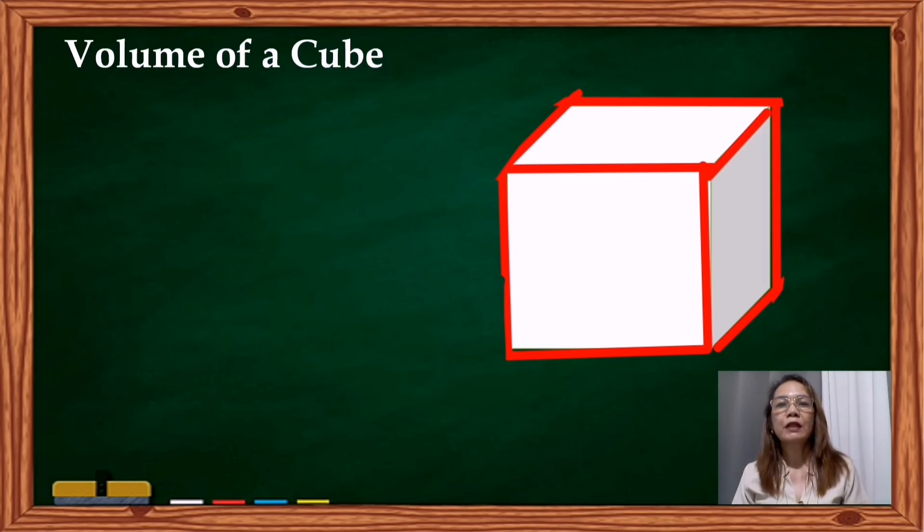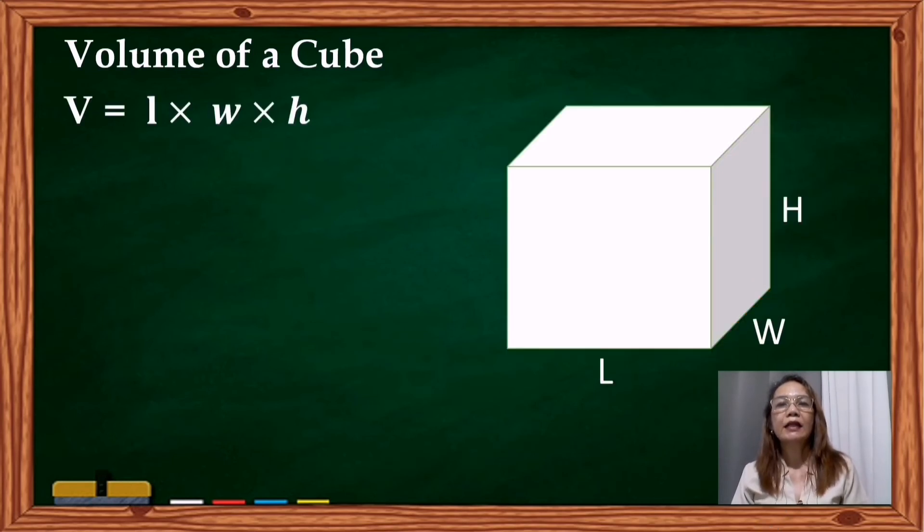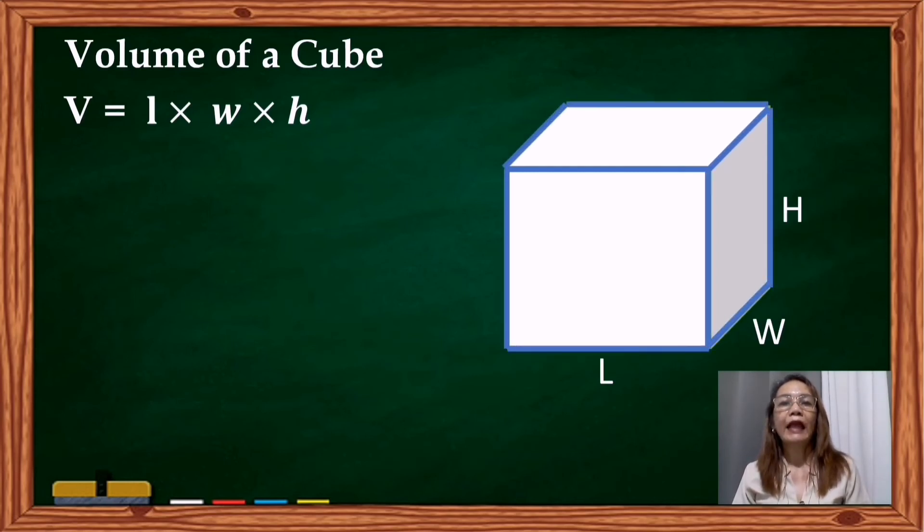A cube is a special figure that has 3 dimensions: the length, the width, and the height. Since all the faces of the cube are perfect squares, the length, the width, and the height are equal. So the sides of the square are also called edges of the cube, and S is the symbol used.